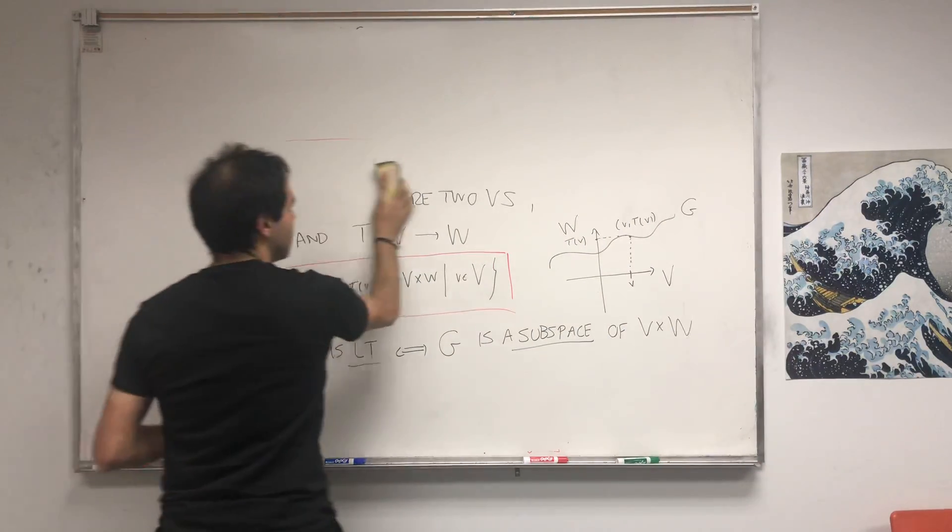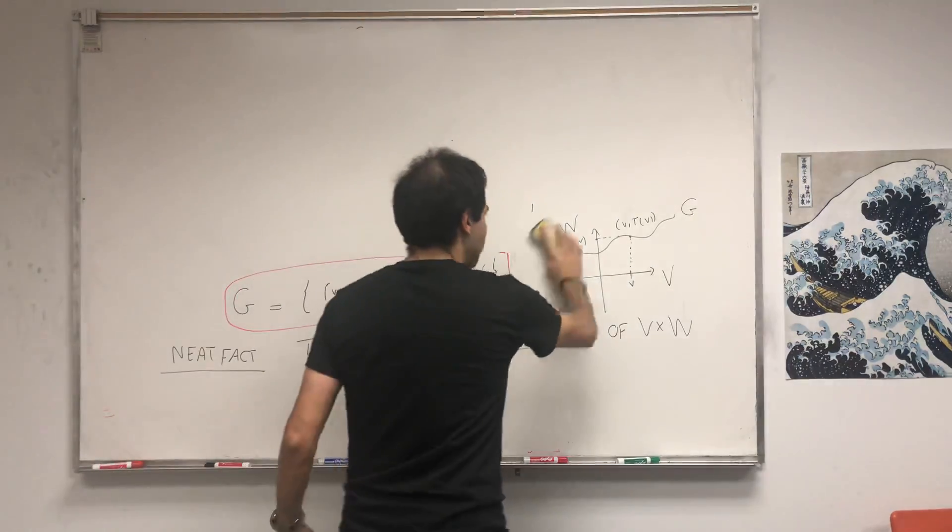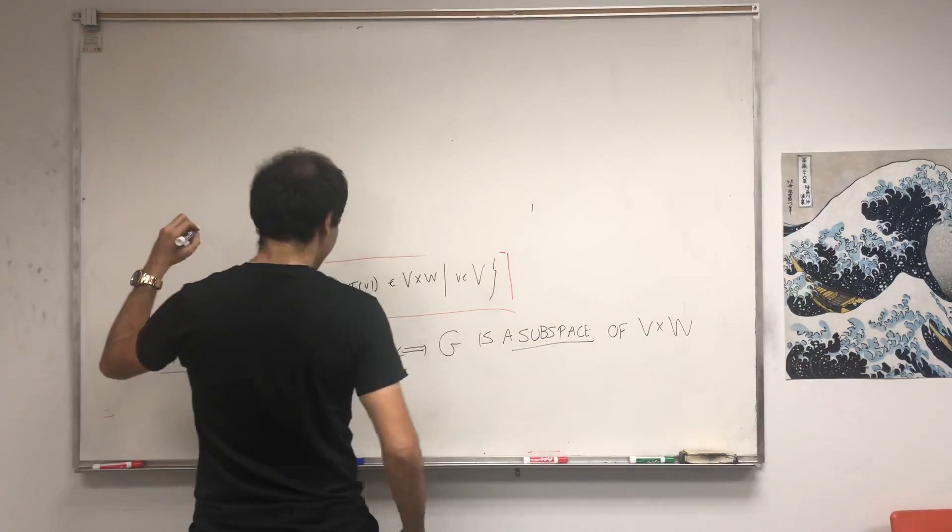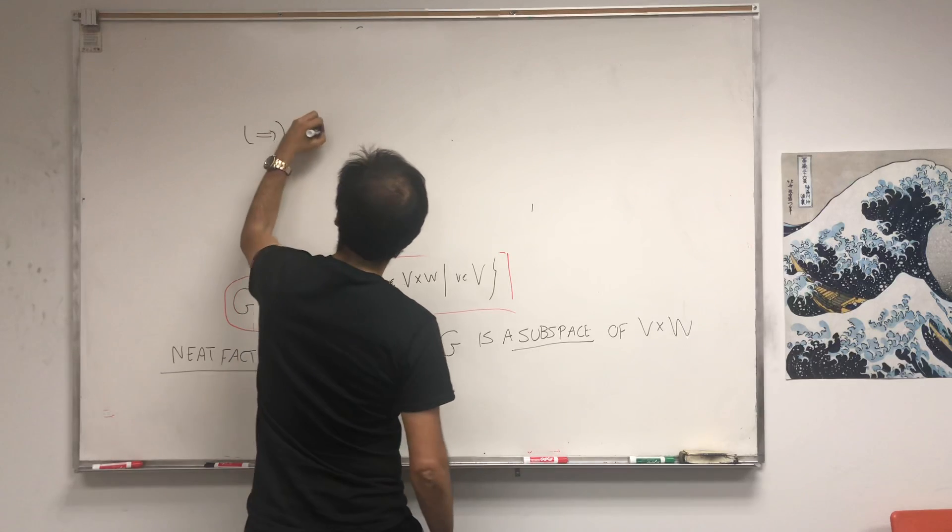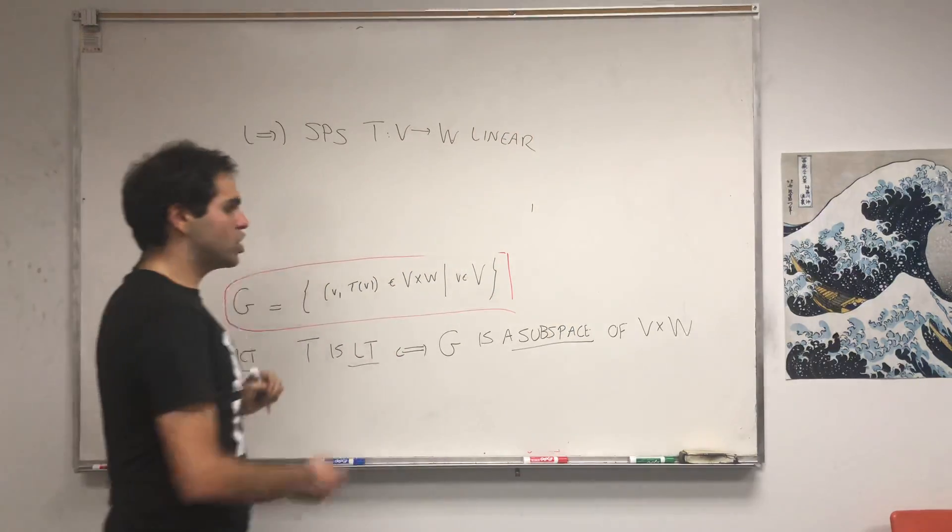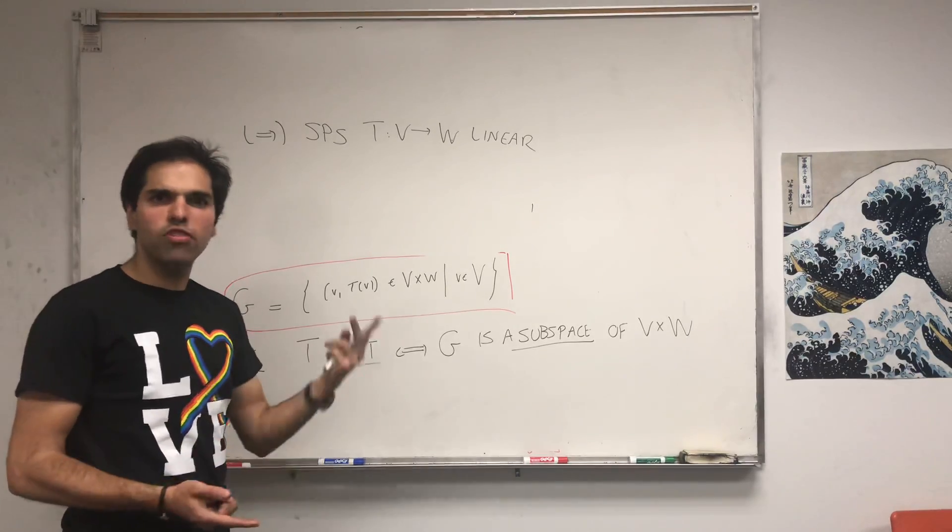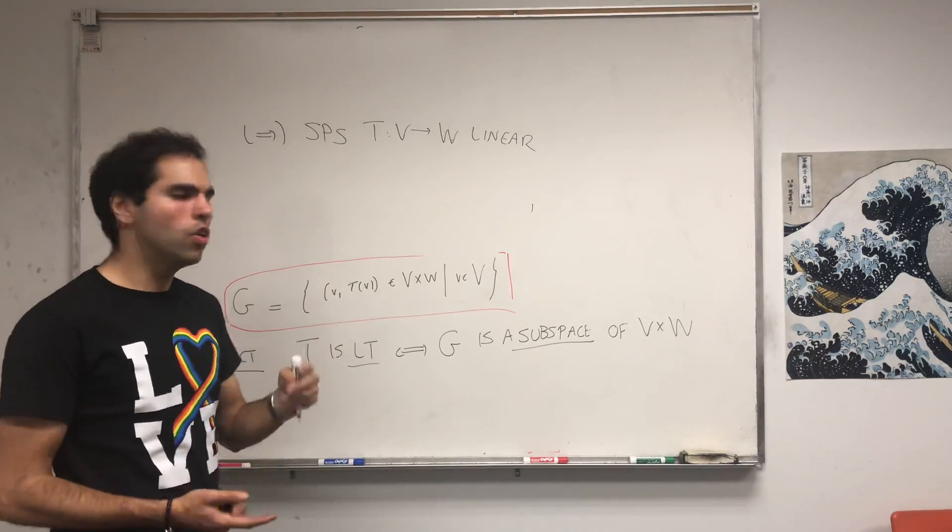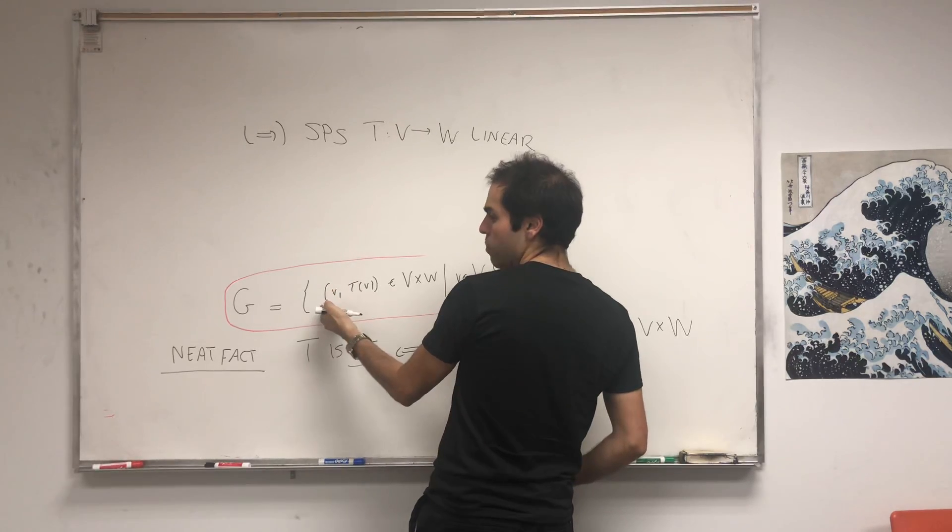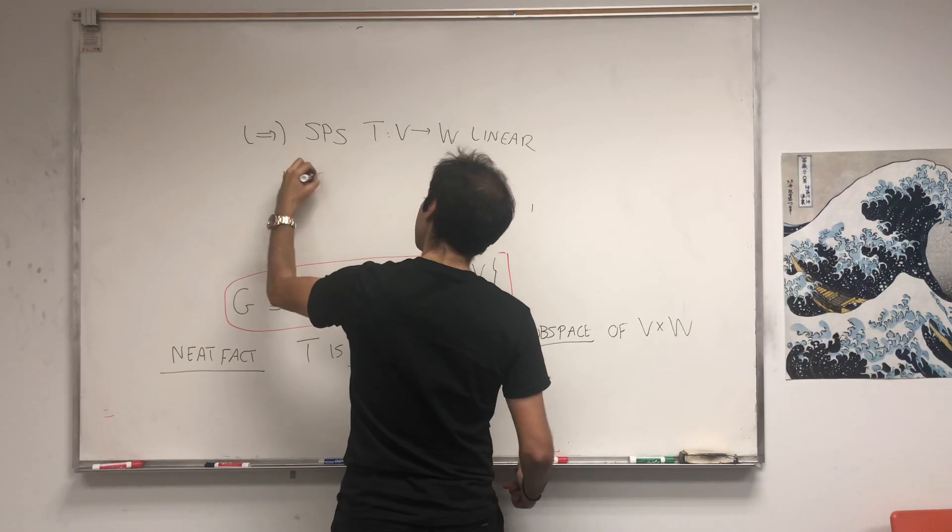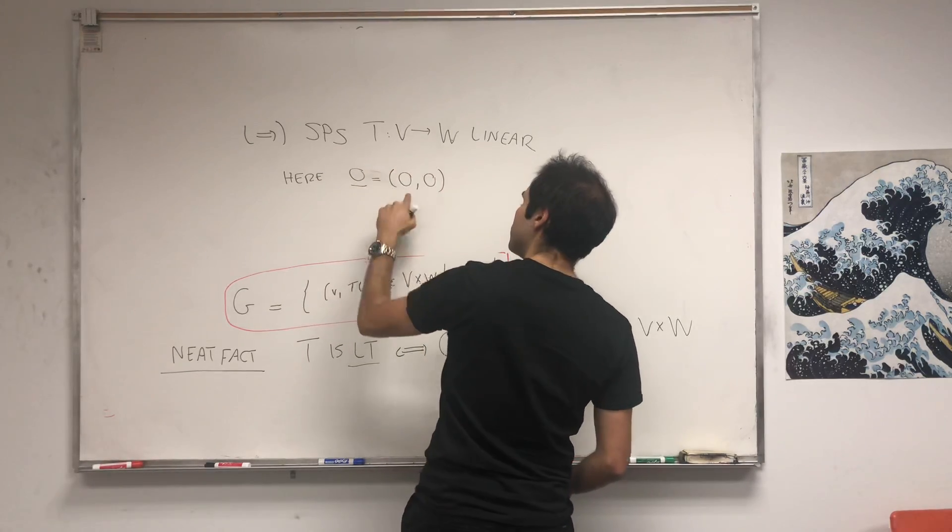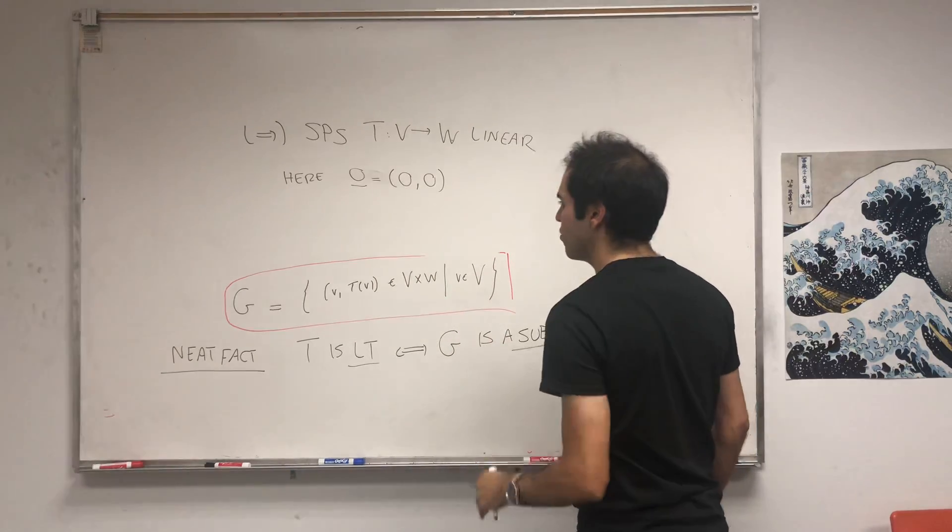Okay, so why is that true? The proof is also very beautiful. Suppose first of all T is a linear transformation. Then let's show it's a subspace, which means we have to show three things: the zero vector is in it, it's closed under addition, and closed under scalar multiplication. What is the zero vector here? It's just the point (0,0), where here's a zero vector in V and the other one is a zero vector in W. The point is, if you let v equal zero, then if v equals to zero,